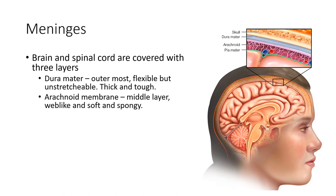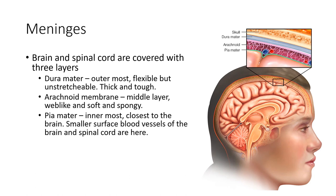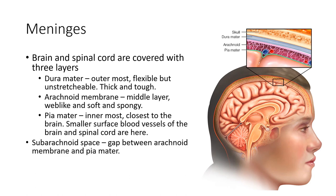The innermost layer, right against your brain, is called the pia mater. It's the closest to the brain, and its surface has blood vessels of the brain and spinal cord. This layer directly covers your brain and spinal cord, and the blood vessels here supply both. We also have the subarachnoid space — the gap between the arachnoid membrane and the pia mater — which is mostly filled with cerebral spinal fluid.